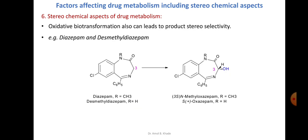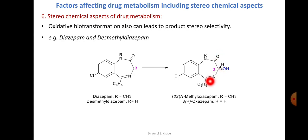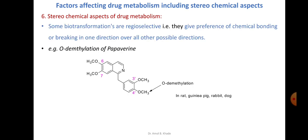Another example of product stereoselectivity is diazepam and desmethyldiazepam. Diazepam has a methyl group whereas desmethyldiazepam has hydrogen at that position. Both undergo biotransformation at carbon 3, and both preferentially form the S enantiomer — 3S-N-methyloxazepam from diazepam and S-plus-oxazepam from desmethyldiazepam — favoring the S enantiomer over the R enantiomer.